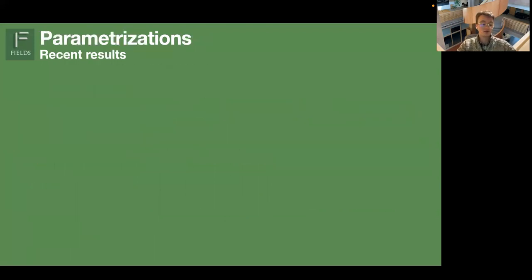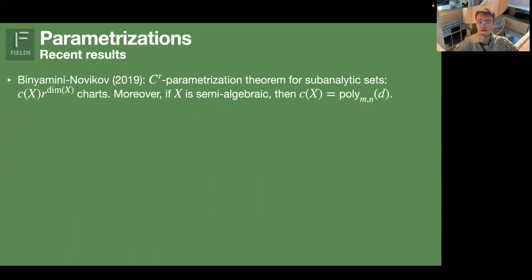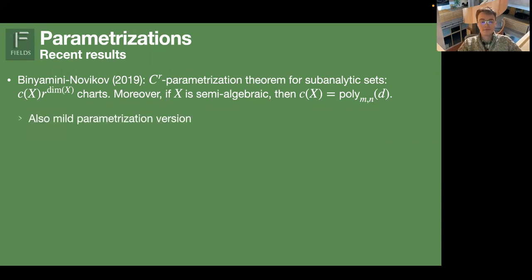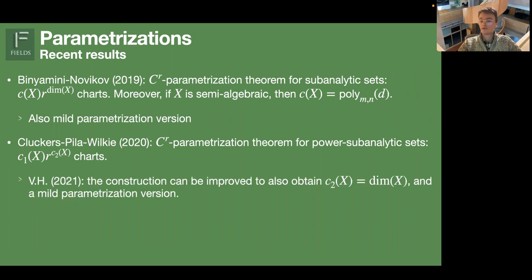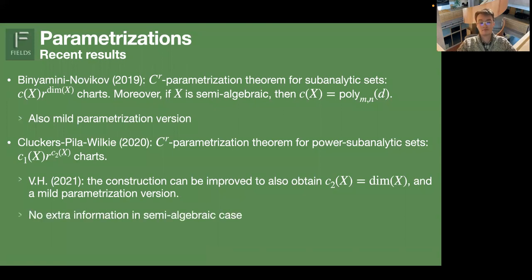Let me discuss some recent results in this direction. Pinyamini and Novikov recently proved such a result for subanalytic sets — you can achieve polynomial dependence in r. They also proved that if X is semi-algebraic, you achieve polynomial dependence in d as well. They also have a mild parameterization version. Another paper with roughly the same result by Cluckers-Spiller and Wilkie proved these results for power-subanalytic sets — a slightly larger class — and also polynomial in r. I've recently improved these results, showing that you can also achieve c_2 equal to the dimension of X, and that they also actually have a mild parameterization version. They don't have this information in the semi-algebraic case.